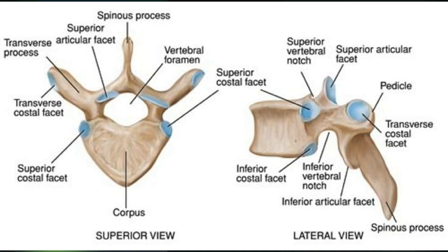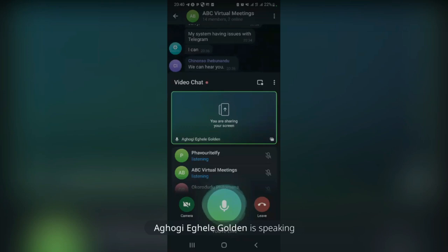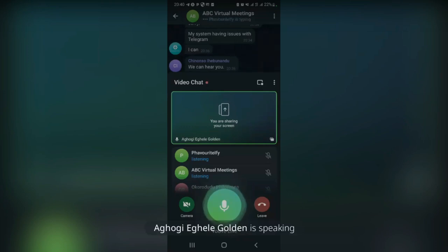The 12 thoracic vertebrae are joined together by the intervertebral disc, which has two parts: the nucleus pulposus and the annulus fibrosus. The annulus fibrosus is fibrocartilaginous in nature.